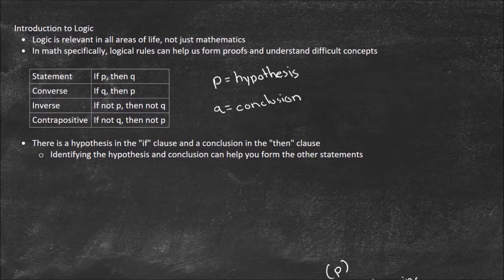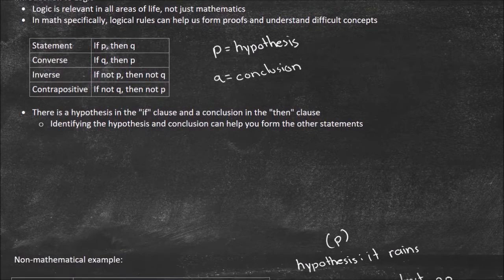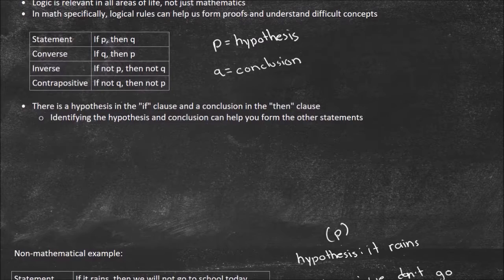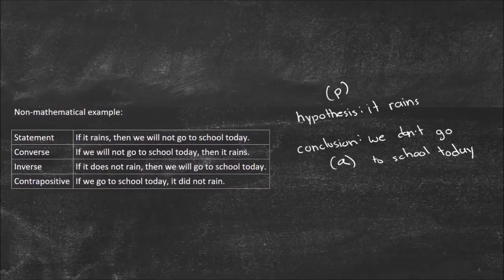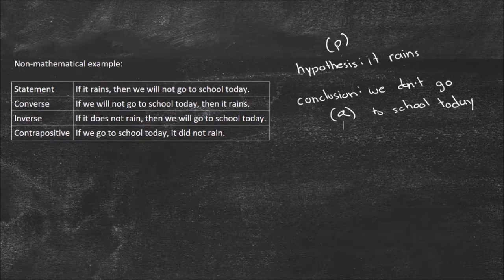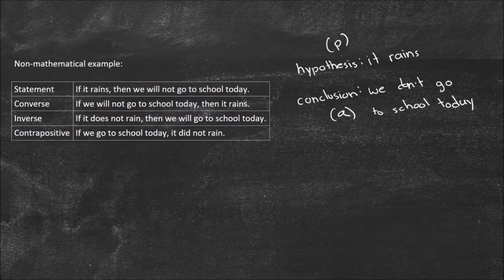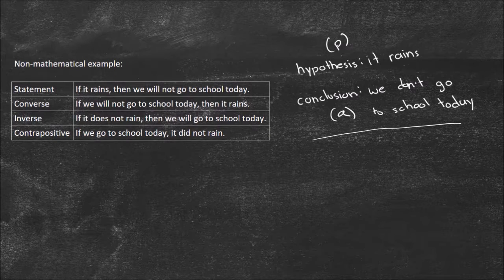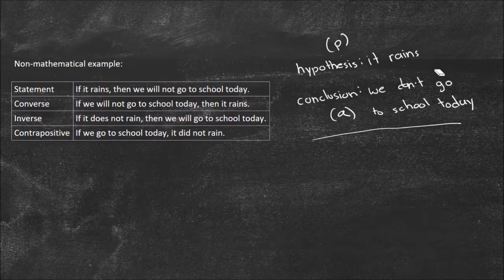I think of the converse as the reverse — we're really just switching everything around. So looking at our original statement, 'if it rains, we will not go to school today,' the hypothesis P is 'it rains' and the conclusion is 'we don't go to school today.' When I form the converse, it's if Q, then P: 'if we will not go to school today, then it rains.' That's how you form the converse.